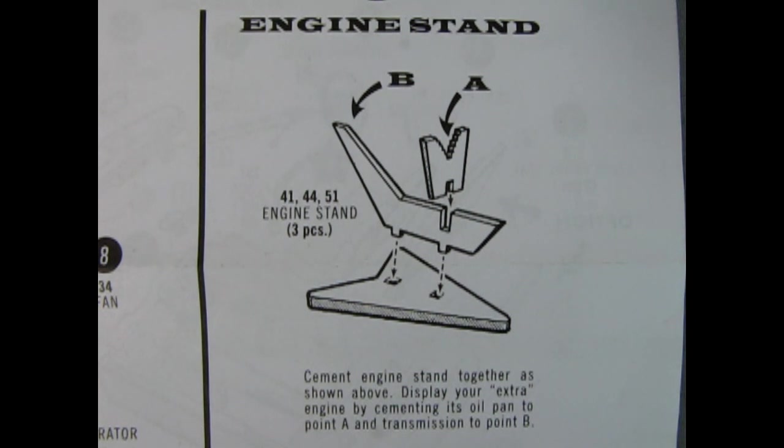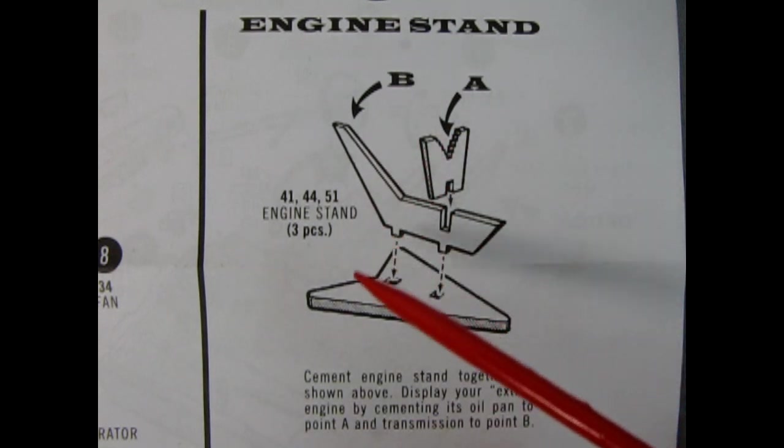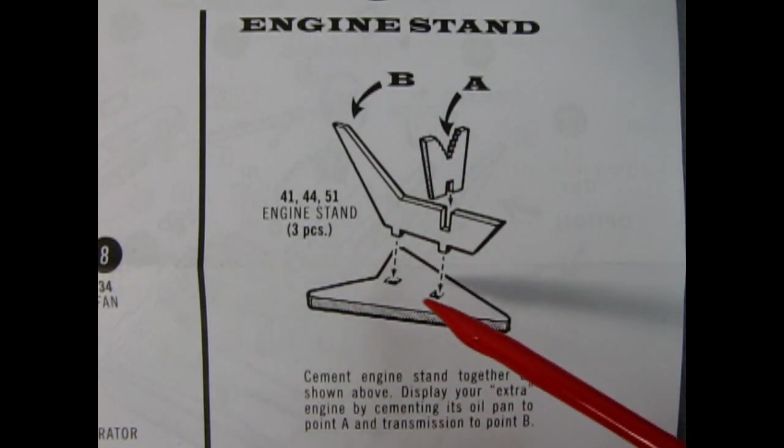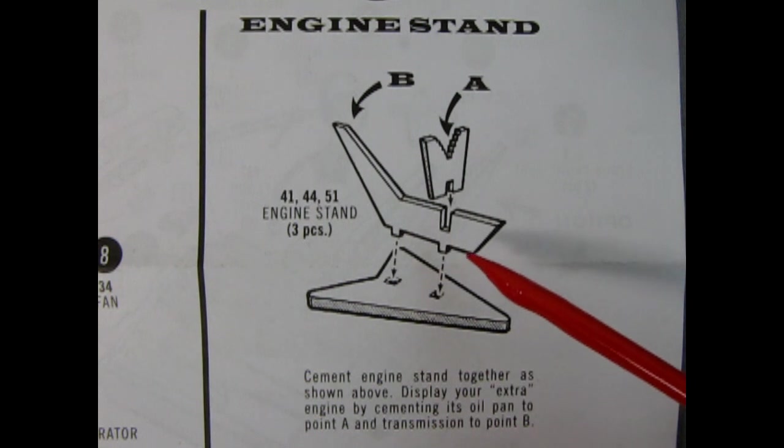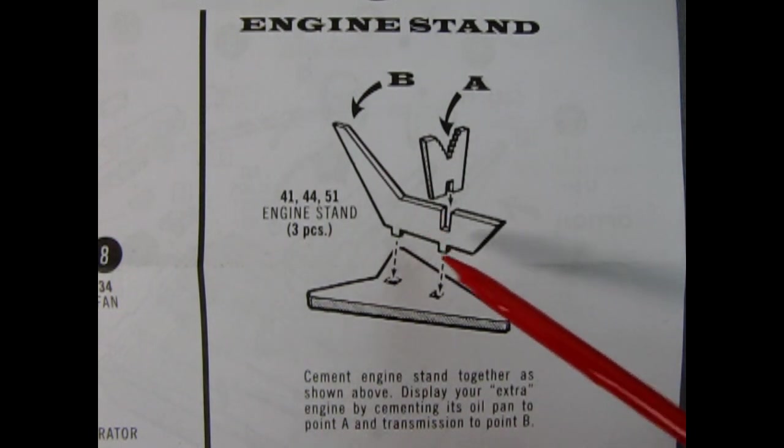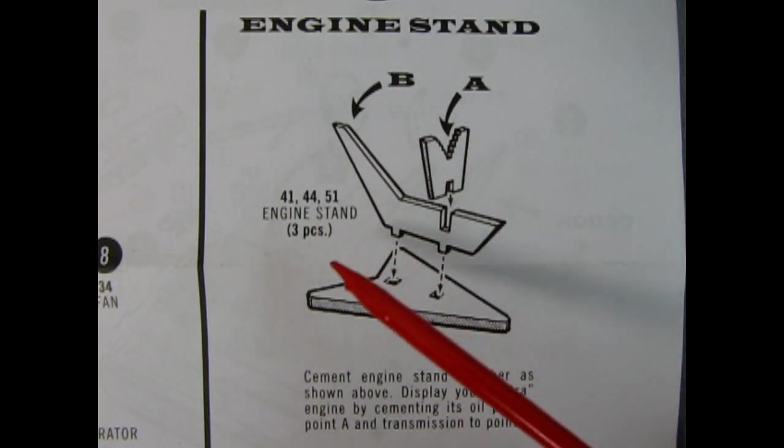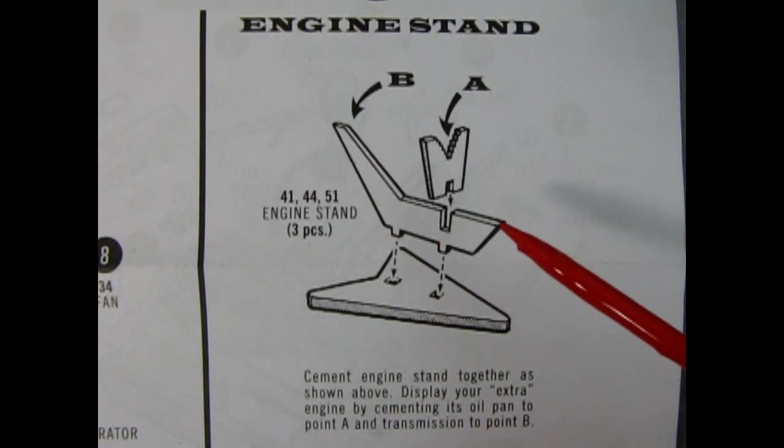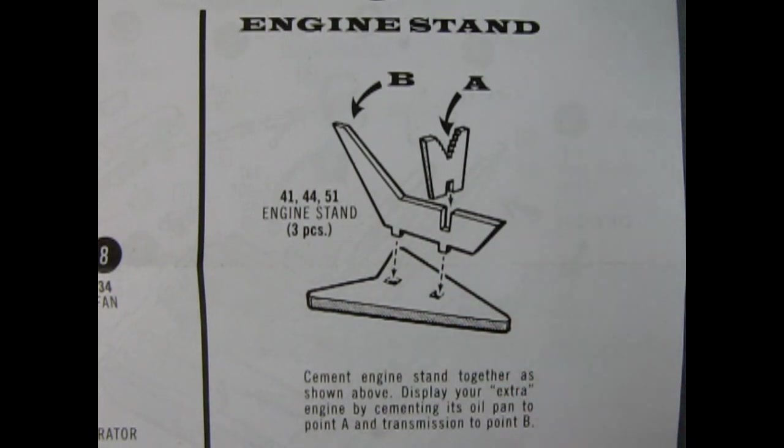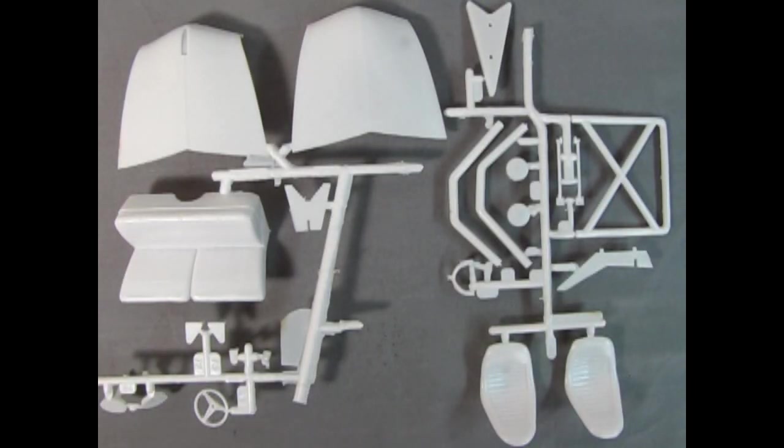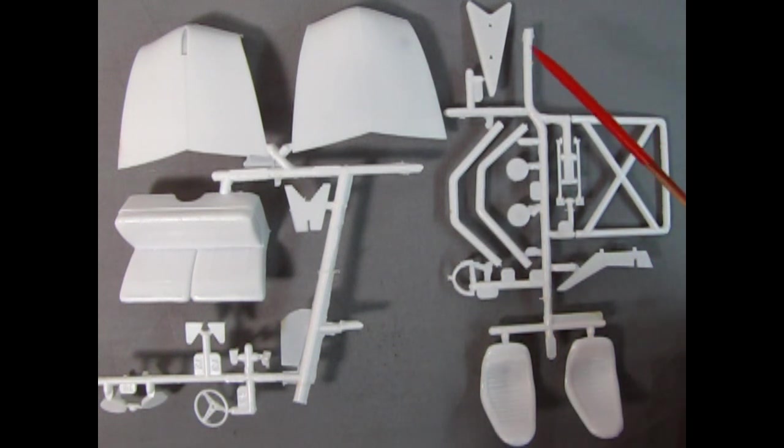AMT's 1949 Ford Club Coupe includes this wonderful engine display stand that consists of three easy parts. Here we have the Star Trek style bottom, we also have the transmission support, and the cross support for the front of the engine block. This glues together in three easy steps, and will be very helpful in displaying your engines. Our engine stand is located on two parts trees, the one with the roll cage and the bucket seats. So here's the transmission support, as well as the base of the display stand.